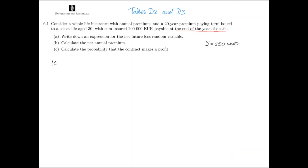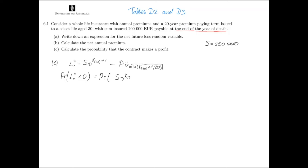In part C, we have to calculate the probability that this whole life insurance contract makes a profit for the insurance company. Recalling from part A, the net future loss is the difference between the present value of benefit outgo and the present value of net premium income. This loss function is random because both benefit outgo and premium income are life contingent; the loss value depends on the time of death of the policyholder. The contract makes a profit when the associated loss is negative, so we need to find the probability that the net future loss random variable is negative — meaning the present value of benefit outgo is less than the present value of net premium income.